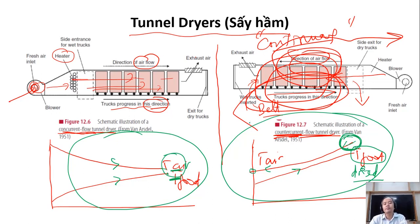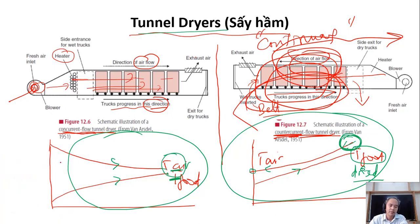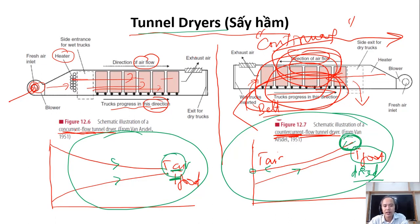Tunnel dryers are normally designed for large-scale processing because they can be a long and large system, allowing continuous drying. However, the flexibility is somewhat smaller than other dryer designs in terms of the number of products and the size of product that can be dried. This design also belongs to the hot air drying category.